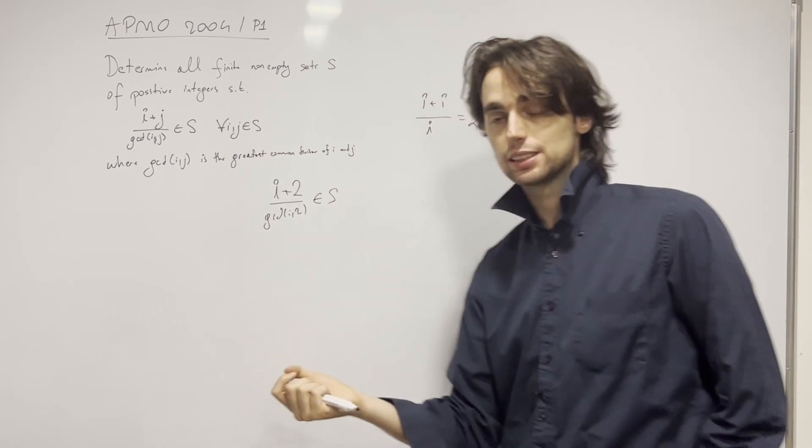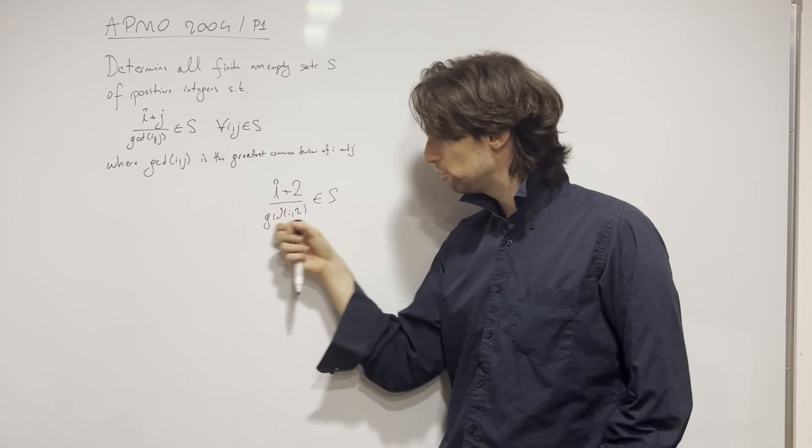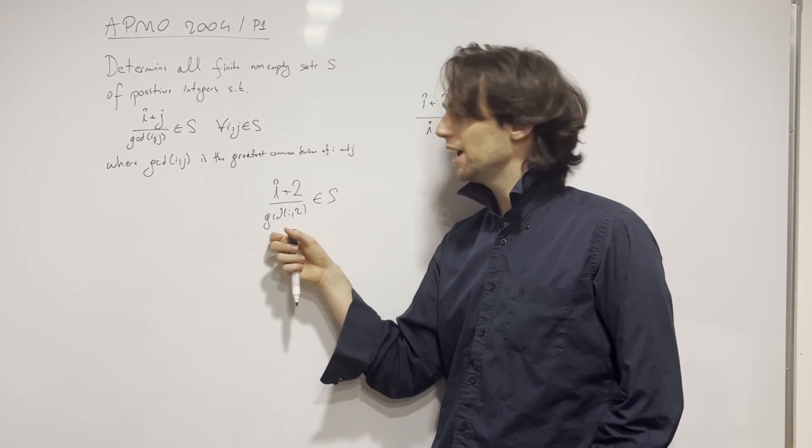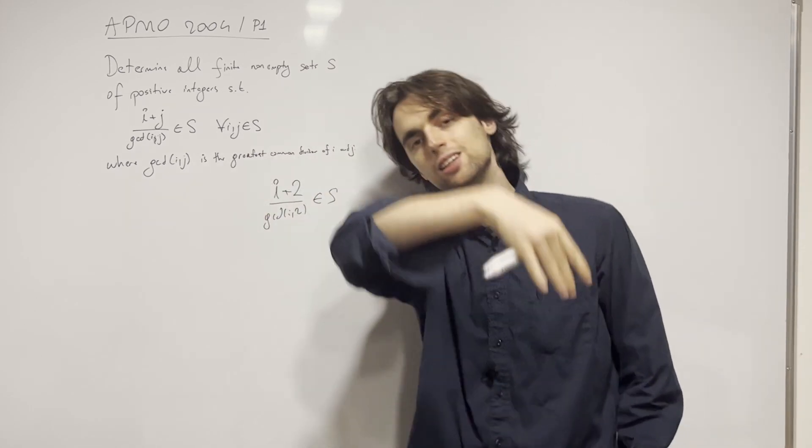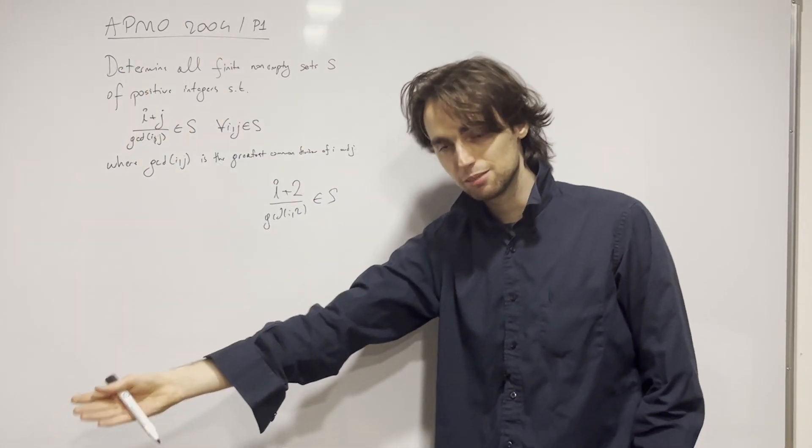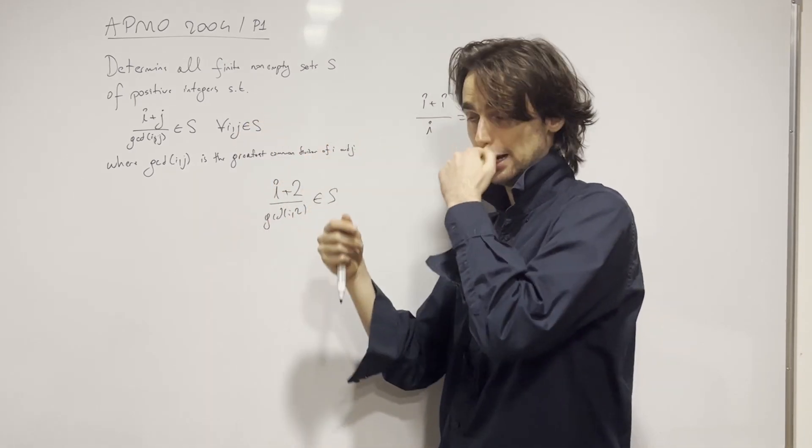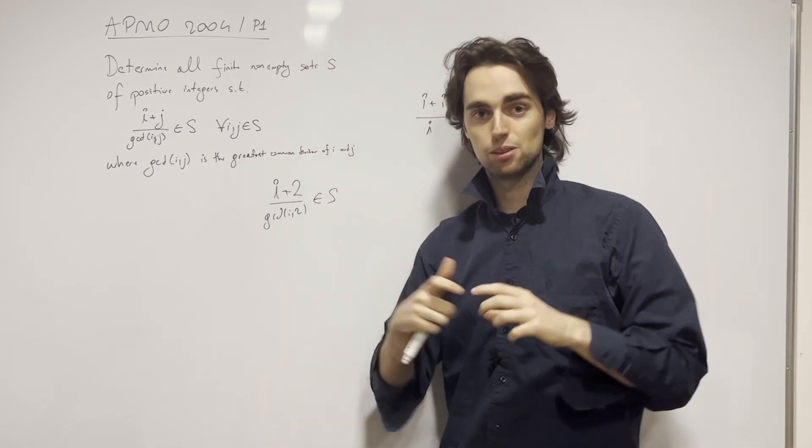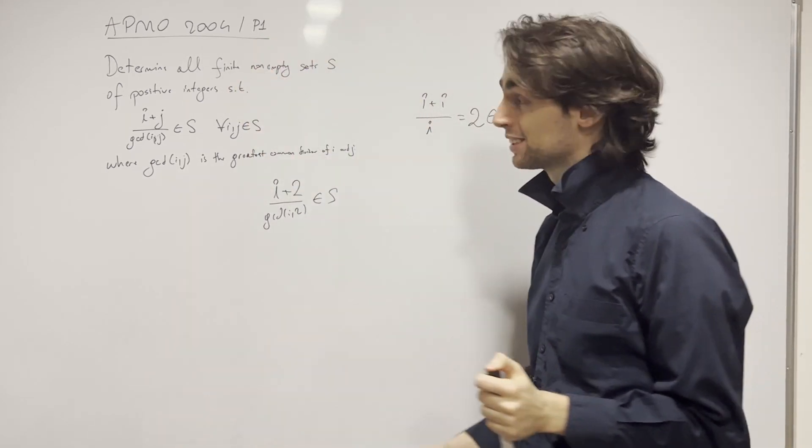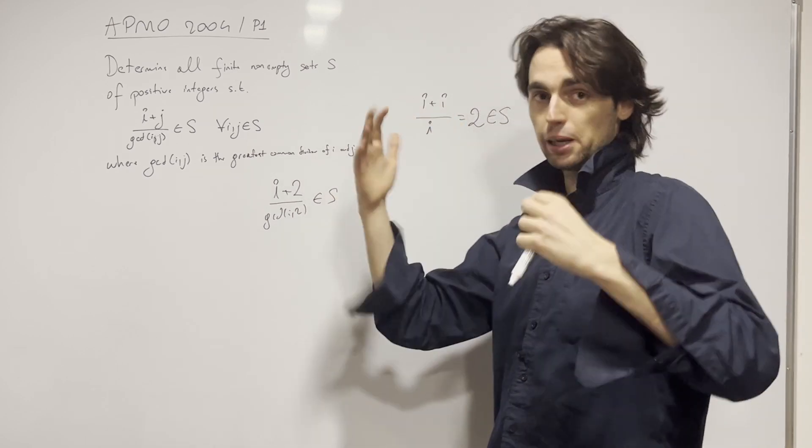And the answer is, if I have an odd i, then this GCD is 1. And then from i, I get i+2. i+2 and i have the same parity. So then I can get i+4, just by having (i+2 and 2)/GCD of them, which is 1, is then an element of S. So I have i+4 as an element of S. In other words, I will keep getting bigger and bigger and bigger elements.